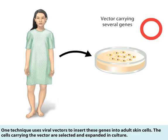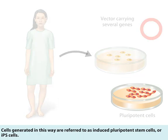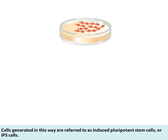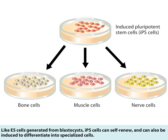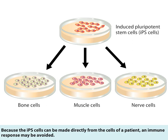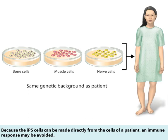One technique uses viral vectors to insert these genes into adult skin cells. The cells carrying the vector are selected and expanded in culture. Cells generated in this way are referred to as induced pluripotent stem cells, or IPS cells. Like ES cells generated from blastocysts, IPS cells can self-renew and can also be induced to differentiate into specialized cells. Because IPS cells can be made directly from the cells of a patient, an immune response may be avoided.